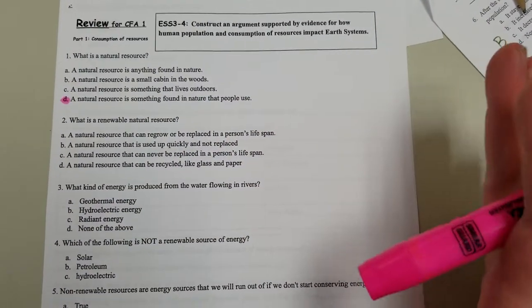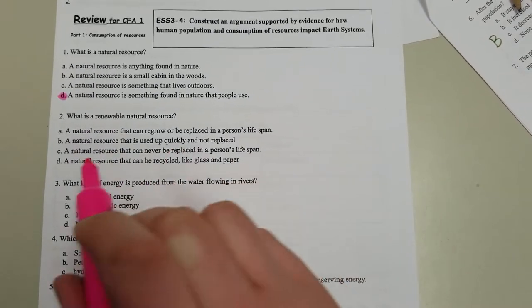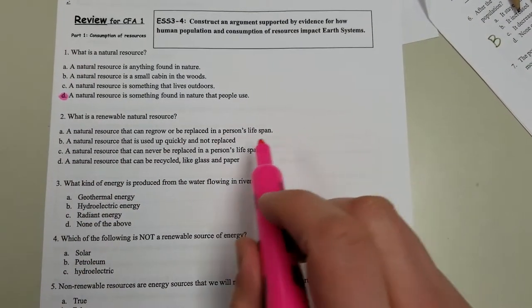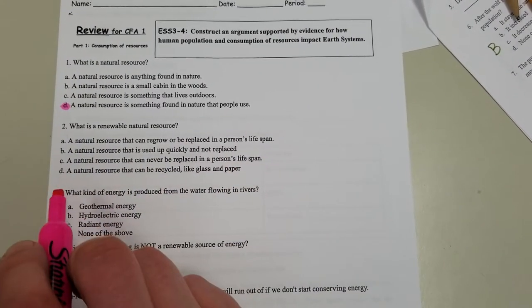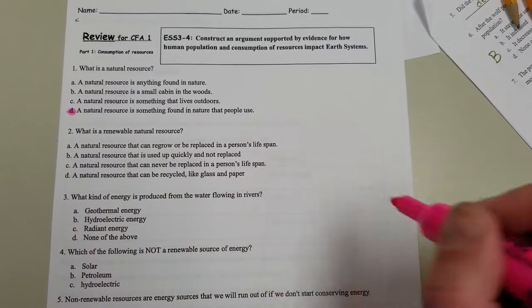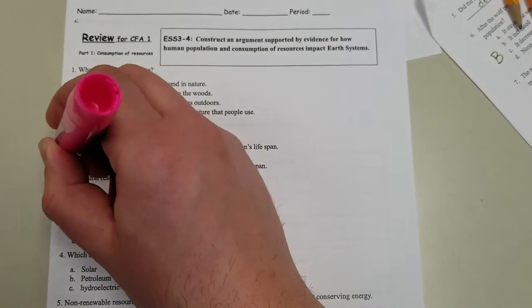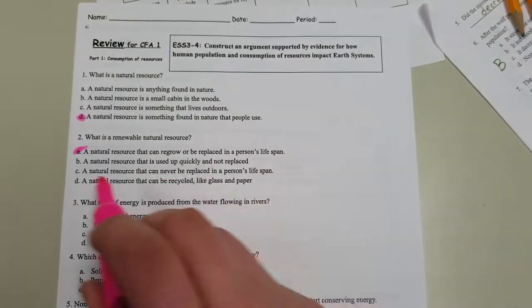So a natural resource that can regrow or be replaced in a person's lifespan, used quickly and not replaced, never be replaced in a person's lifespan, can be recycled like paper and glass. It's gonna be 'can regrow or be replaced.' Remember it's not reuse, it's remake, renew.